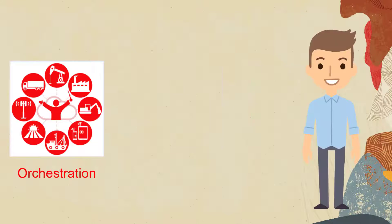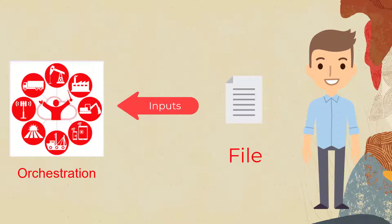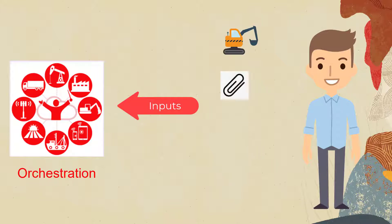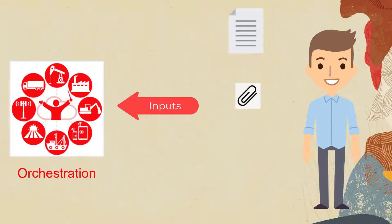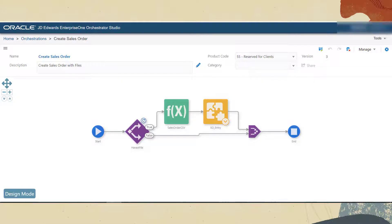If necessary, users can provide inputs such as numbers, dates, and text. But what if one of the inputs to the orchestration is a file? For example, the orchestration allows for an image to be attached to an automated email message, or a document image is to be attached to a sales order. With the latest capabilities available in JD Edwards Enterprise One, a business analyst can run orchestrations right from an Enterprise One page, and if the orchestration requires a file as input, the user can simply choose the file from the file system.